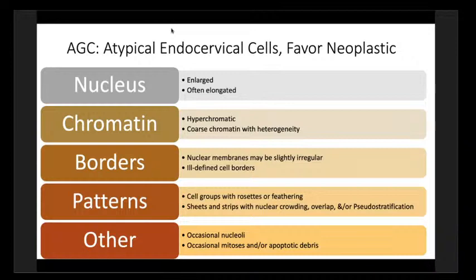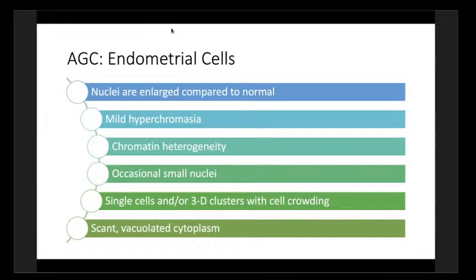For atypical glandular cells of endometrial type, criteria include nuclei that are enlarged compared to normal — about 35 microns normally but slightly enlarged here — with some hyperchromicity. The chromatin heterogeneity stays smooth as you look at it. You may see small nucleoli, single cells, or 3D clusters with crowding, and possibly some vacuolization of the cytoplasm.